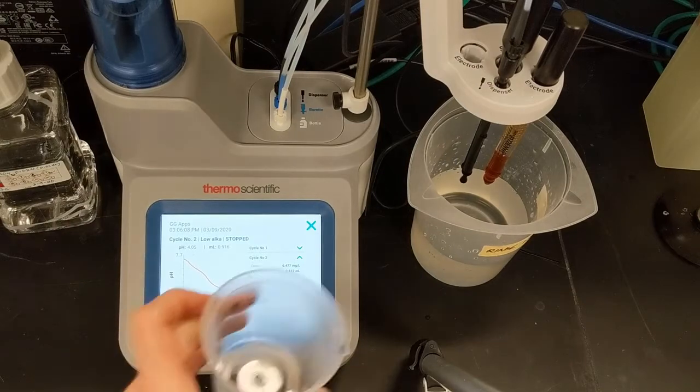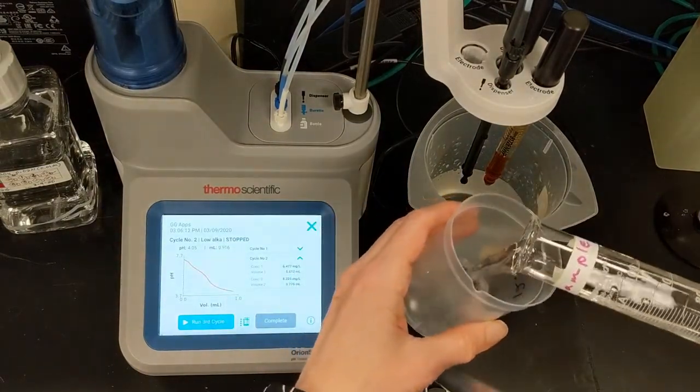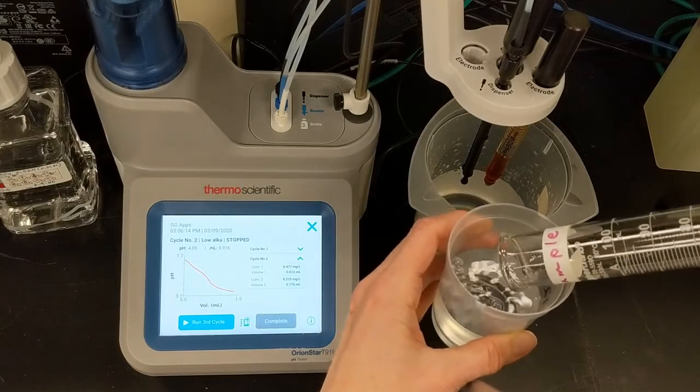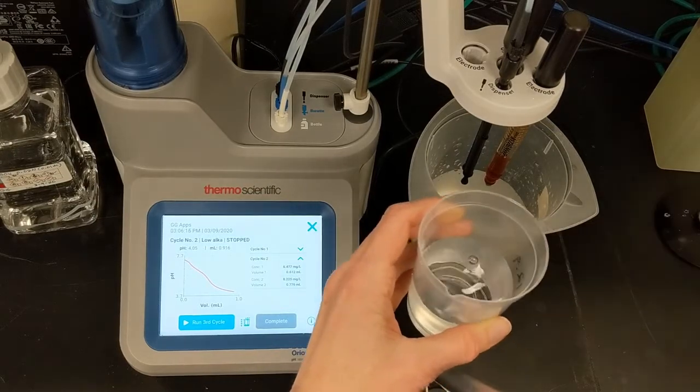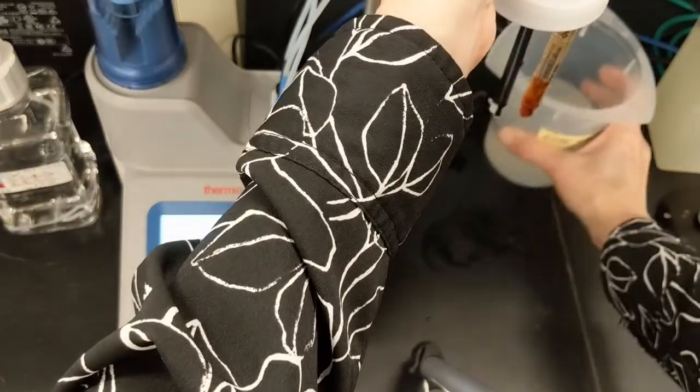Again, I measure 100 ml of the sample in a graduated cylinder and transfer to a clean beaker. I can run one to five cycles for each sample. This is my third and last cycle for this sample.